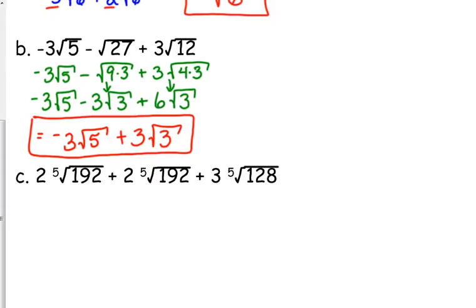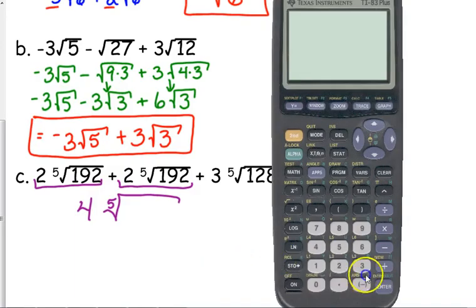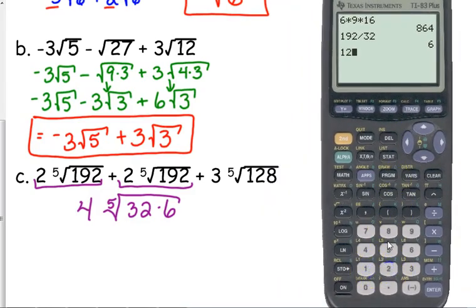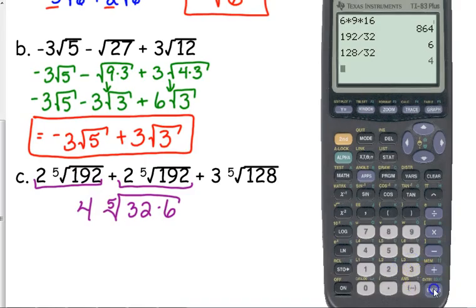All right. Let's do one with a little bit higher order root. Well, first of all, the nice thing is, is we have common roots right here. Let's go ahead and combine those. We have four fifth roots of, let's see here, 192. I'm going to start with 32, because fifth roots, they get really big really fast, so hopefully 32 is going to work. That's 2 to the 5th, and it does. So we can rewrite 192 as 32 times 6. And let's see if 128 is also divisible by 32. It is. So I'm going to rewrite 128 as 32 times 4.